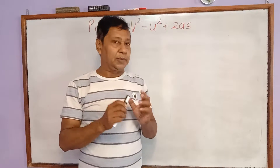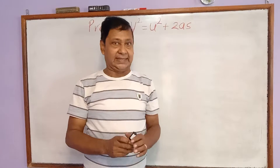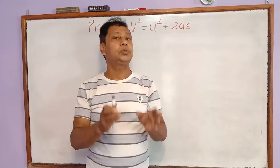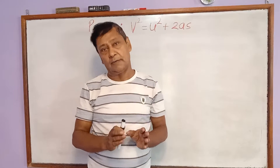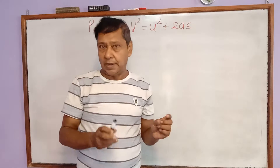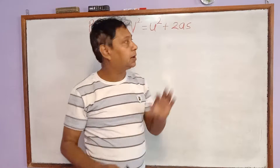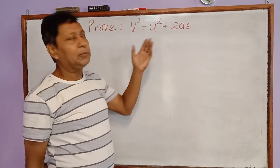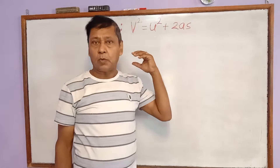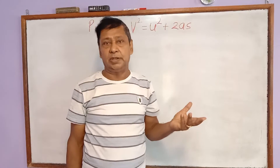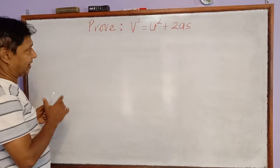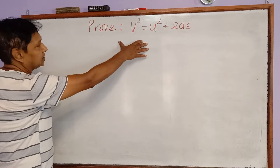V squared equals u squared plus 2As. This is one of the equations of motion used to solve numerical problems of uniformly accelerated bodies. Now I'm going to prove this, as it is one of the common examination questions: prove V squared equals u squared plus 2As. How can we prove this?